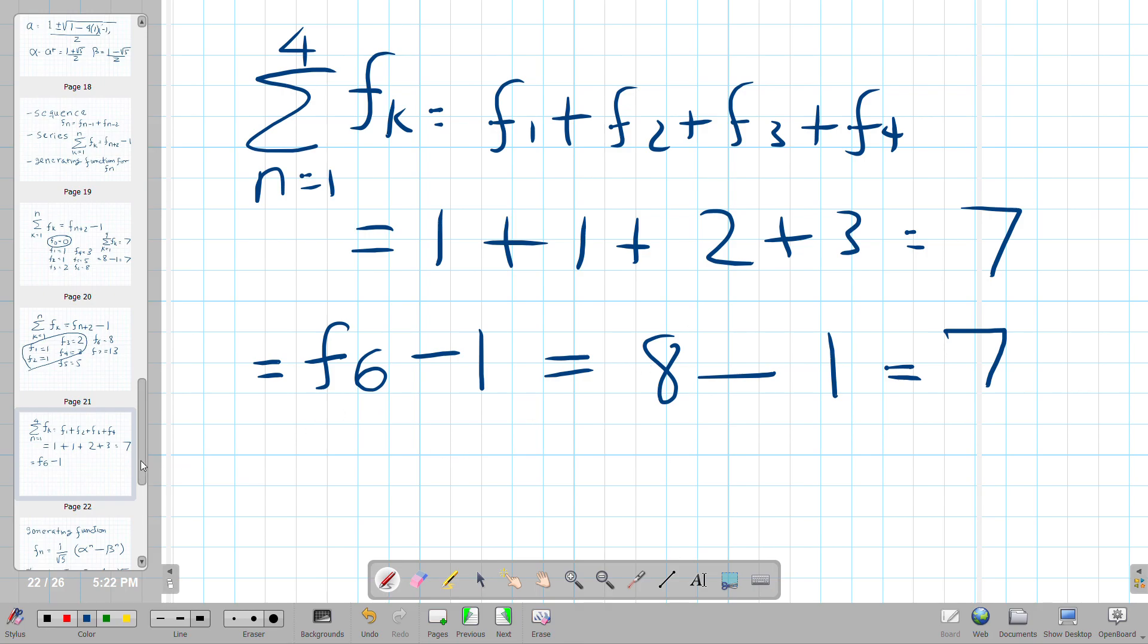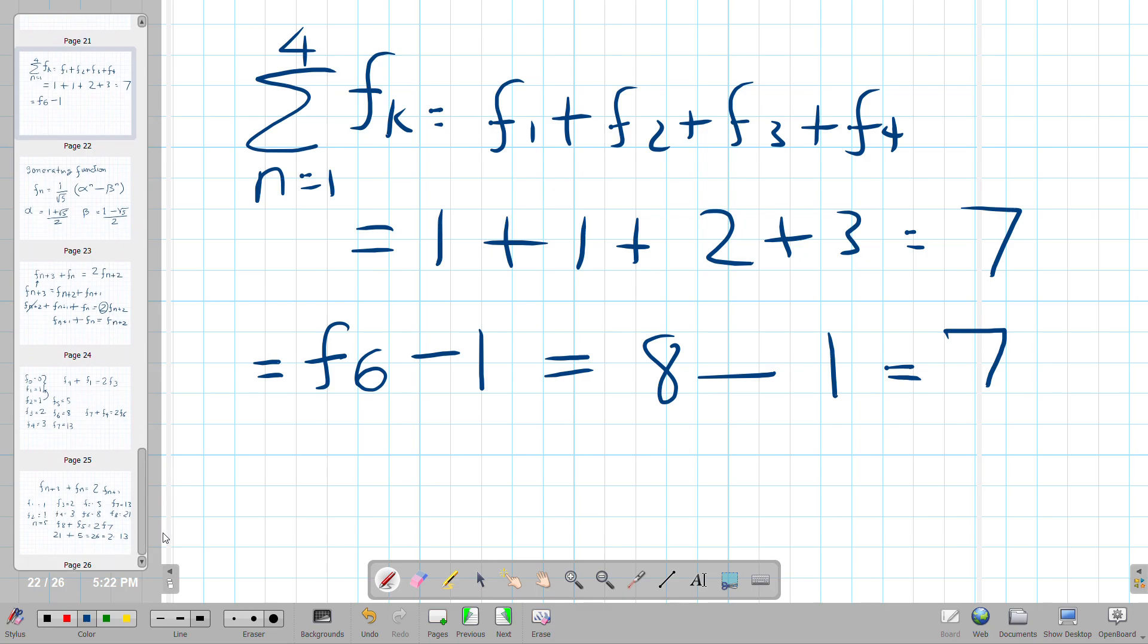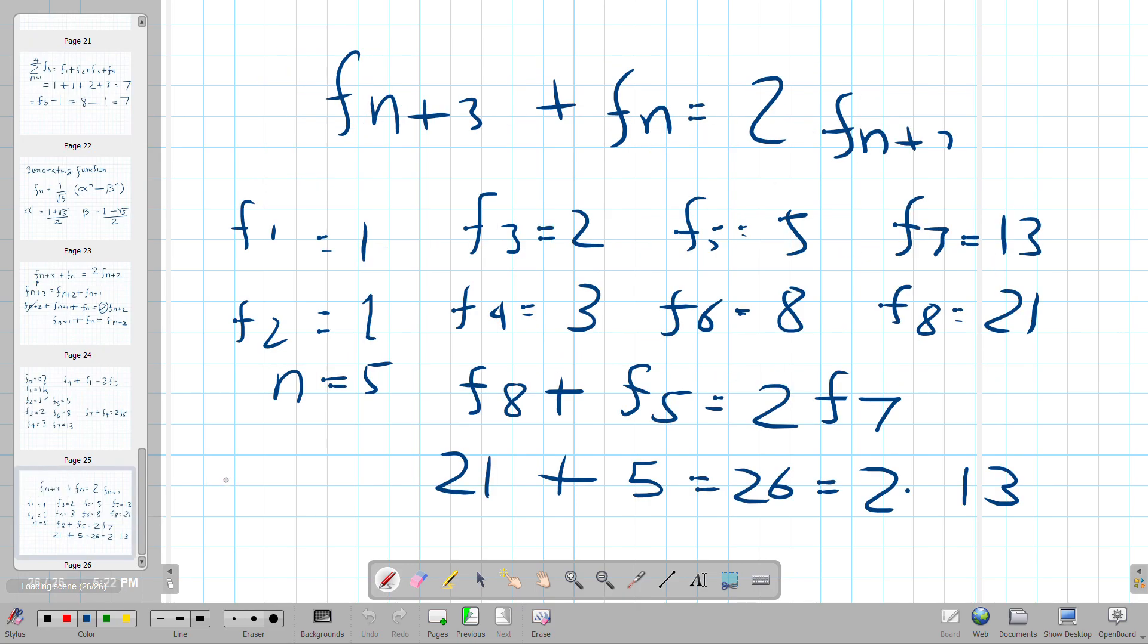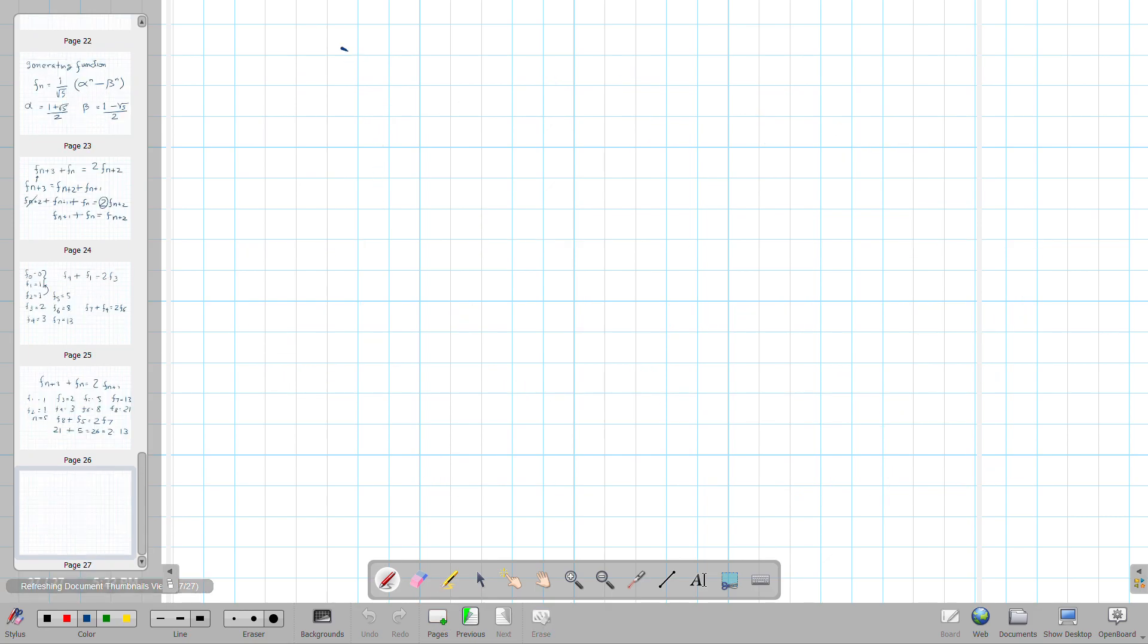Then another thing, another type of formula that you can have fun with when it comes to the Fibonacci sequence, did it again, is this formula. So I'm going to write it in another sheet and it goes F of N plus three plus F of N is equal to two times F of N plus two.